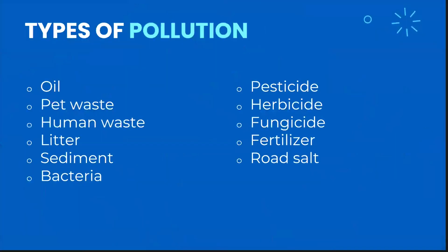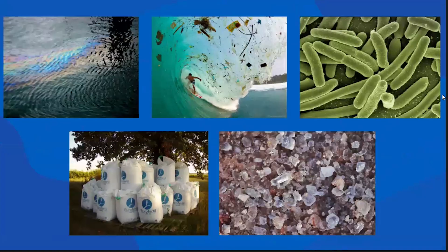Some types of non-point source pollution include oil, pet waste, human waste, litter, sediment (which can be caused by erosion), bacteria, pesticide, herbicide, fungicide, fertilizer, and road salts, among other types. From left to right, starting in the top corner, we have an oil slick, litter in the ocean, bacteria, bags of fertilizer, and road salt. These are all examples of pollution that can make its way into our environment.